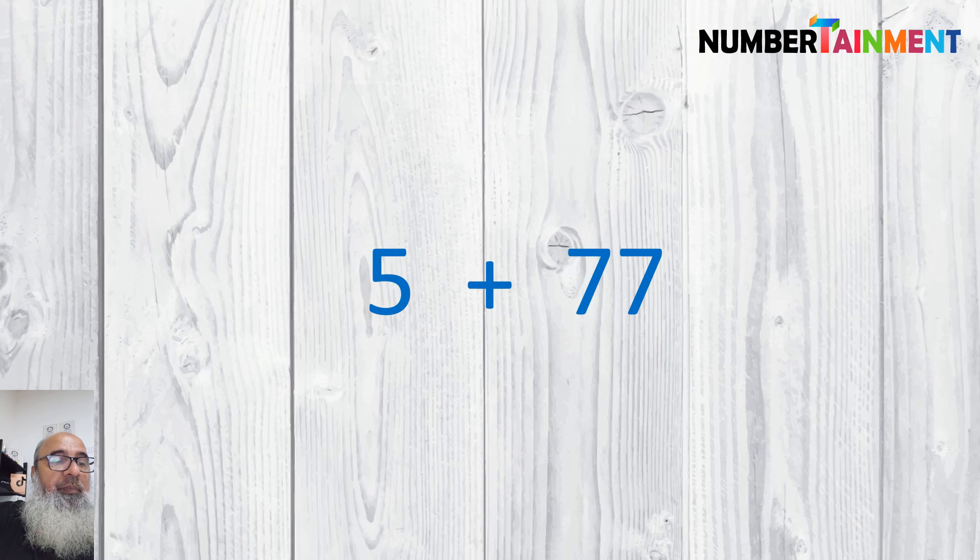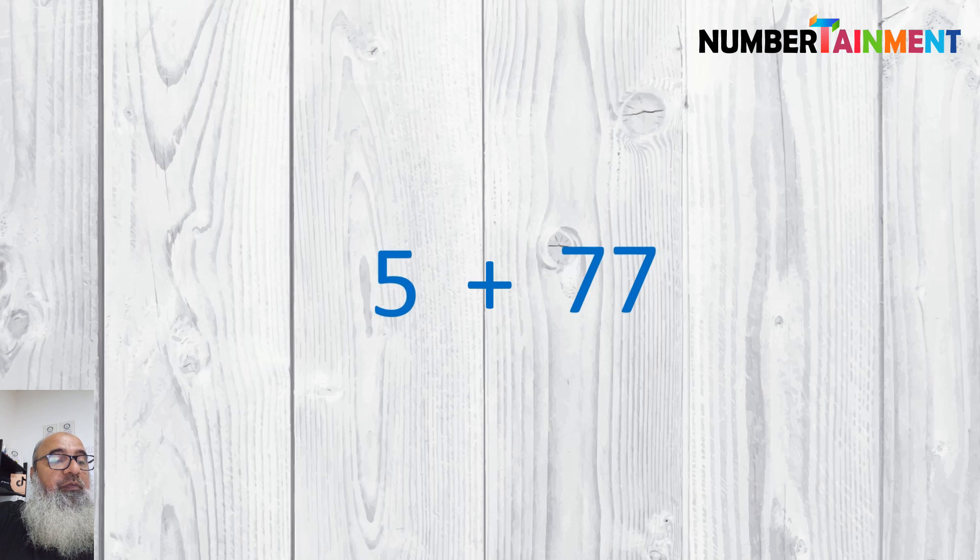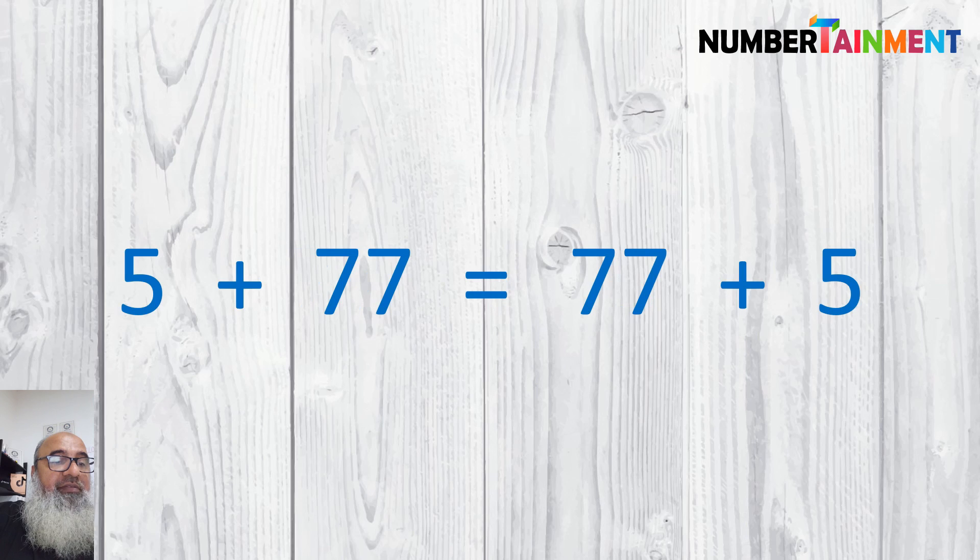Now notice also that if we want say 5 plus 77, we can add 5 to 77 because 5 plus 77 will give us the same result as 77 plus 5. The order of the numbers does not matter. We can always reverse the order if we want to. So 5 plus 77 is equal to 82.